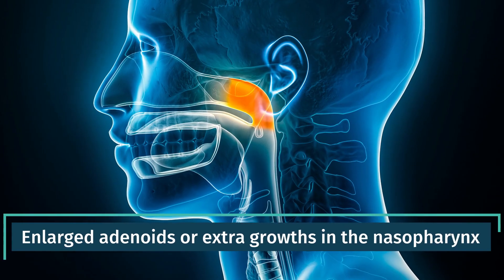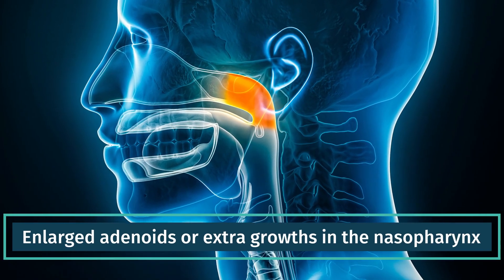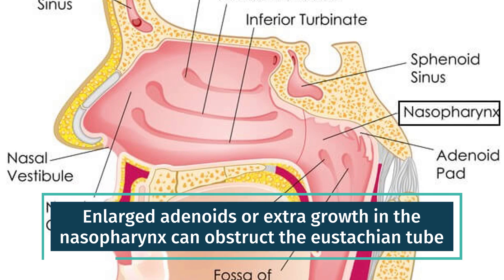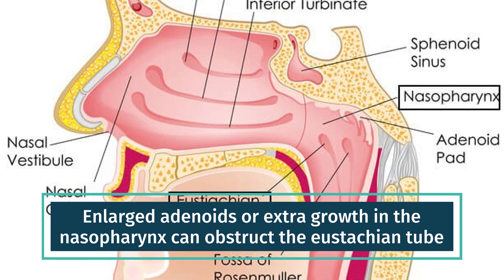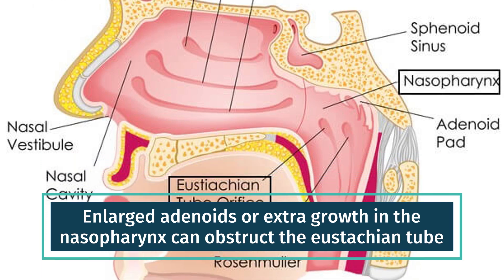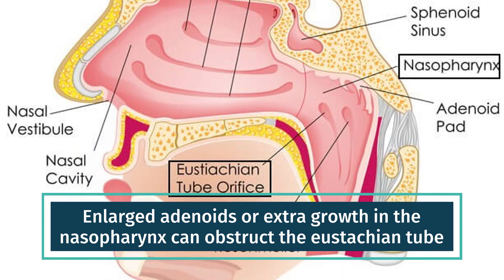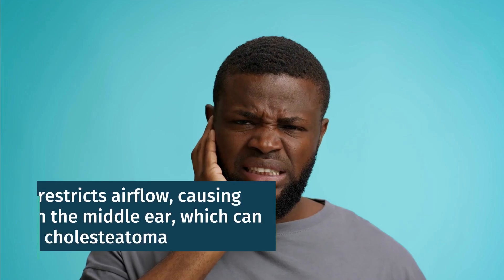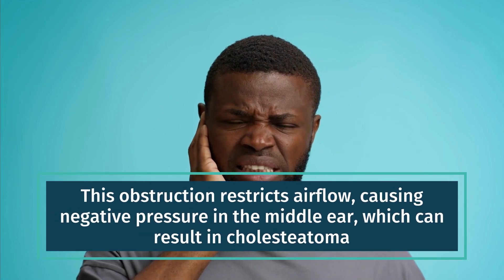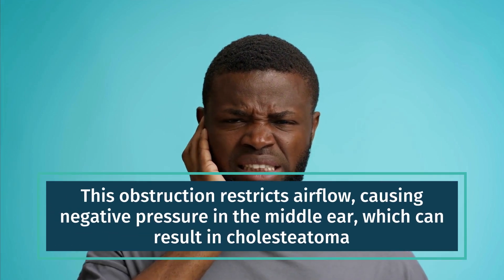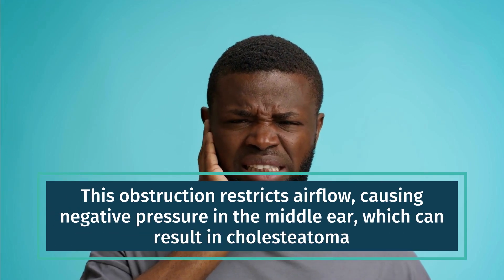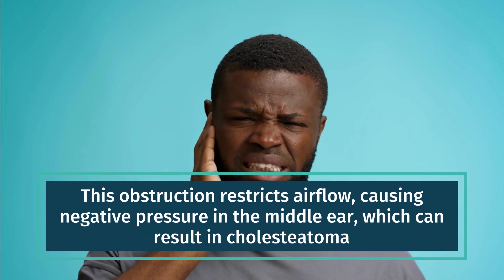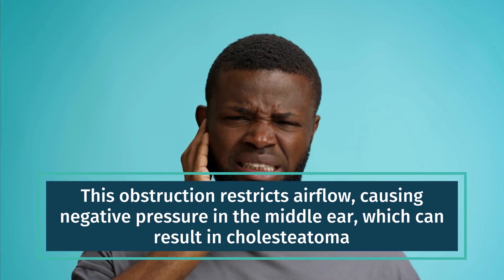Enlarged adenoids or extra growths in the nasopharynx. Enlarged adenoids or extra growth in the nasopharynx can obstruct the eustachian tube. This obstruction restricts airflow, causing negative pressure in the middle ear, which can result in cholesteatoma.